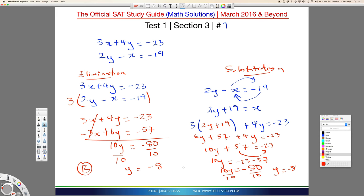So, getting the same negative 8, the answer is also going to be B. So, using elimination method, substitution method, you could solve this question relatively easily on the SAT.